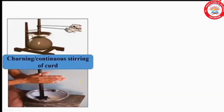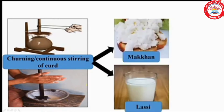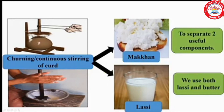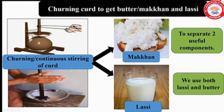The second example is churning, or continuous stirring of curd, to separate two components. The first component is butter and the second component is buttermilk — 'makka' means butter and 'lassi' means buttermilk. Here both butter and buttermilk are useful components, so we use both of them.